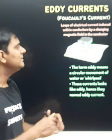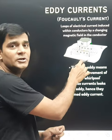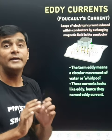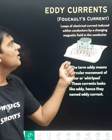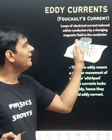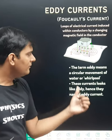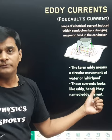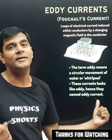As shown in this diagram, when a magnet is moving towards a conducting sheet, current loops are induced in the sheet — these are called eddy currents, represented by I. We can say loops of electric current are induced within the conductor by a changing magnetic field, or by a changing magnetic flux associated with the conductor. The term 'eddy' refers to the circular movement of water or a whirlpool, and since these currents look like eddies, they are named eddy currents.